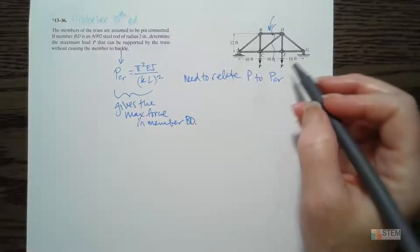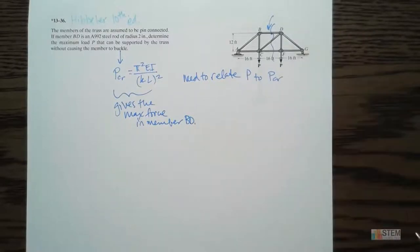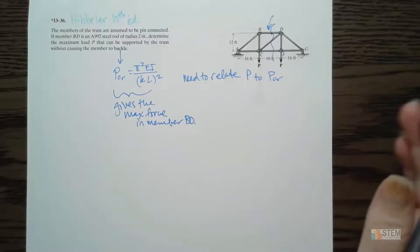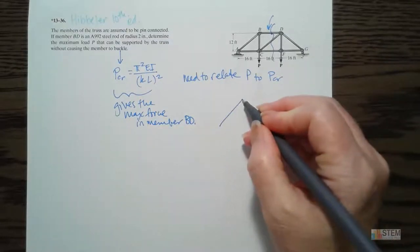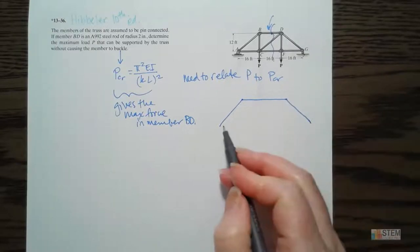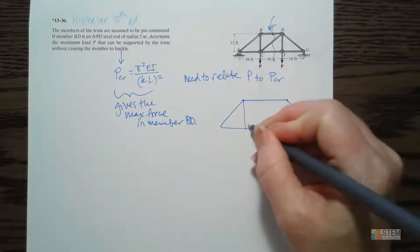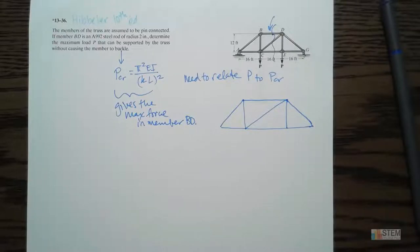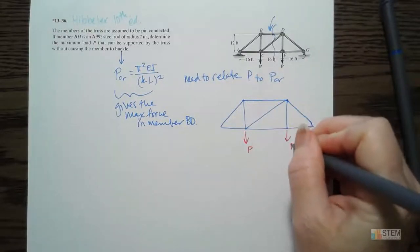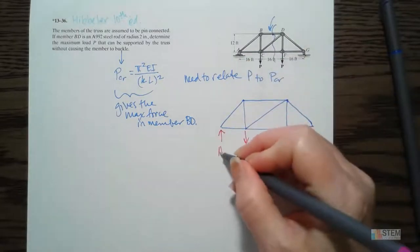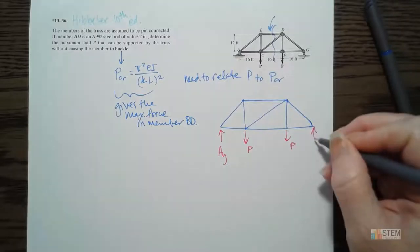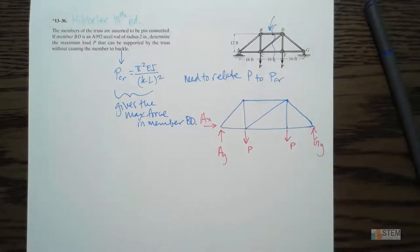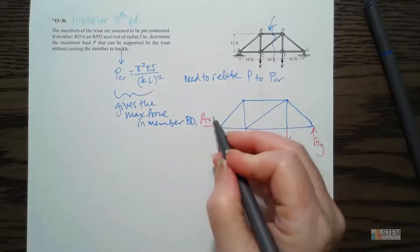We can use the method of sections to find the force in member BD. In order to do that, I need to know what's going on at supports A and G. You could actually just look at this and tell that the forces at A and G will both be P going up, but let's go ahead and solve that with equations. We don't have any other forces in the X direction, so A_X is going to be zero.